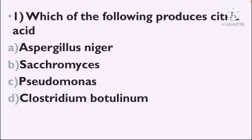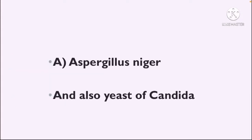First question: Which of the following produces citric acid? Option A: Aspergillus niger, Option B: Saccharomyces, Option C: Pseudomonas, Option D: Clostridium botulinum. The correct answer is Option A, Aspergillus niger. Also, yeast of Candida — both produce citric acid.